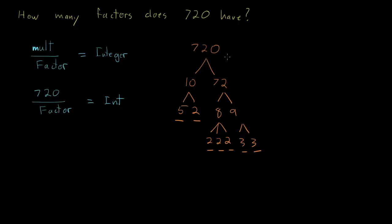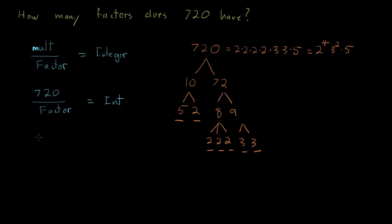I want to emphasize something about prime factorization: it's not just a trait or characteristic of a number — it's also a way that we can rewrite the number. It's likely to be easier to make deductions if I rewrite 720 as 2 × 2 × 2 × 2 × 3 × 3 × 5, or in exponential form: 2 to the 4th, 3 squared, and a single 5.